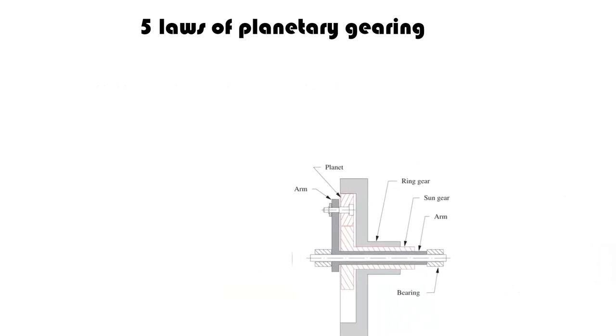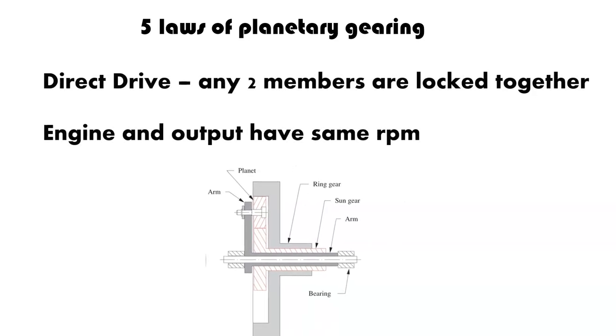Now, the last law is direct drive. So, any two members are locked together. Now, what this does is, whatever your engine is doing, the output will have the same RPM. So, if we just take, for example, that your ring gear and your sun are just locked together, basically what it does is it clamps the planet gear, and it just takes it along for the ride. So, whatever it is that you have attached to your output, this becomes one solid mass, or operates as a solid mass, going on to the differential, out to your differential, which will be your wheels.